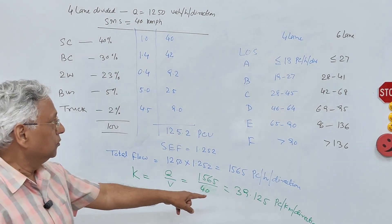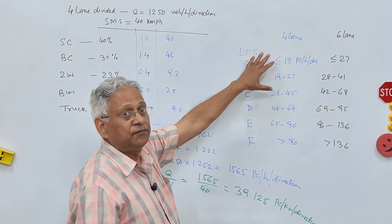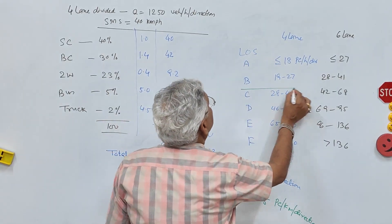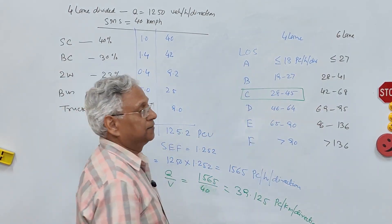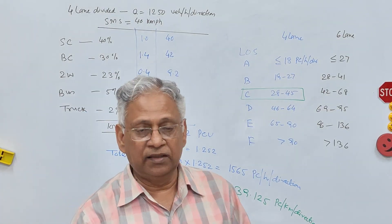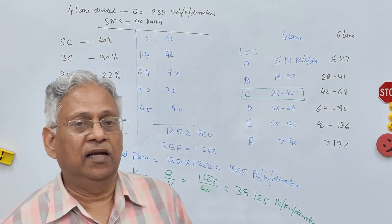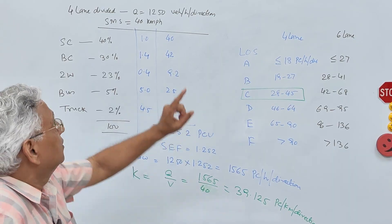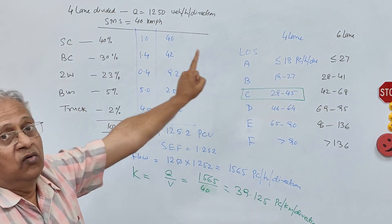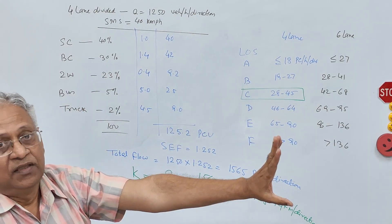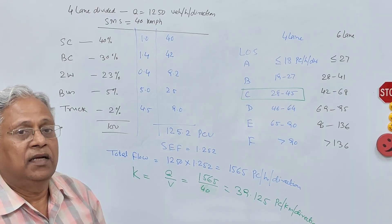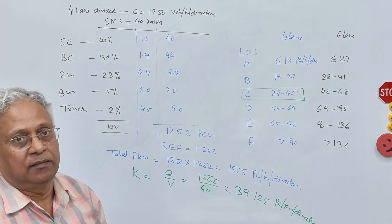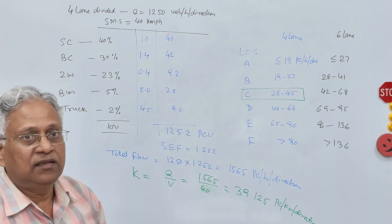With this density value, enter the LOS table for a four-lane highway and you get LOS C. So the LOS on this section of the highway is C at the time when the traffic volume of 1250 vehicles per hour per direction was measured. That is how we determine the LOS on a multi-lane highway as per Indo-HCM. Thank you very much for watching this video.